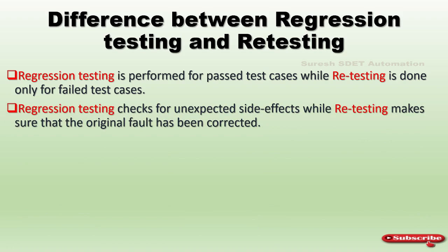Regression testing checks for unexpected side effects, while retesting makes sure that the original fault has been corrected. For example, version 1 is live and version 2 is an update — you integrate both, perform testing, and check for unexpected behavior. If you find any issue in your beta version, you log a defect and retest those defects to verify the issue is fixed.